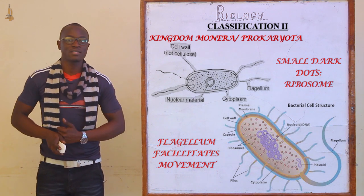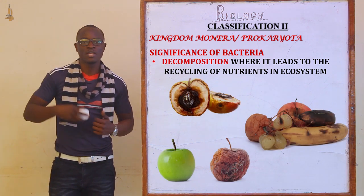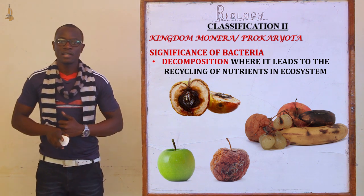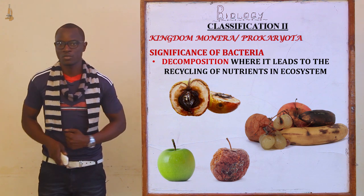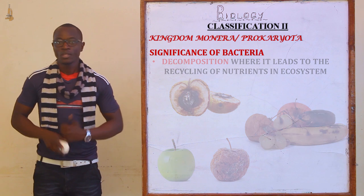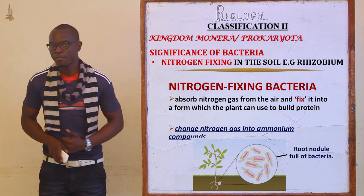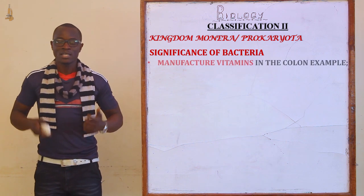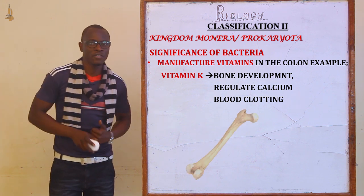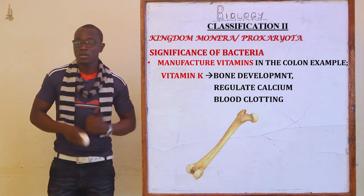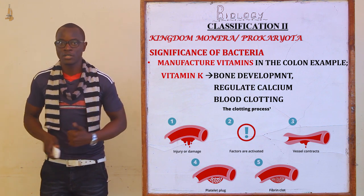What are the significances of bacteria? The first significance is decomposition, which leads to the recycling of nutrients in the ecosystem — bacteria decompose food and return nutrients to the ecosystem for other organisms. Another significance is nitrogen fixing, whereby rhizobium bacteria fix nitrogen in the soil for plants to consume. Some bacteria also manufacture vitamins, especially in the colon — for example, vitamin K, which facilitates bone development and regulates calcium. Plasmids are also important for the blood clotting process.